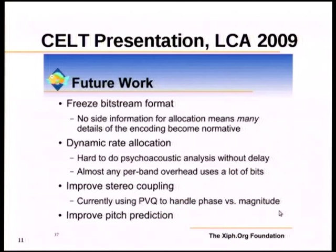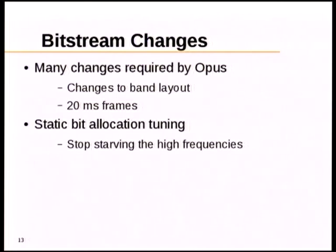This was from the LCA 2009 presentation — we had a slide on future work, so let's see how that went. First point was freezing the bitstream format. Although that took a lot more than a few months, it is now done. We made many changes required for integration within Opus. We changed the band layout so we could have the same layout for all frame sizes, allowing frame size changes on the fly without glitches. We also implemented 20 ms frames because SILK used that, which also had the benefit of increasing quality — for music, 20 ms frames are better than 10 ms.